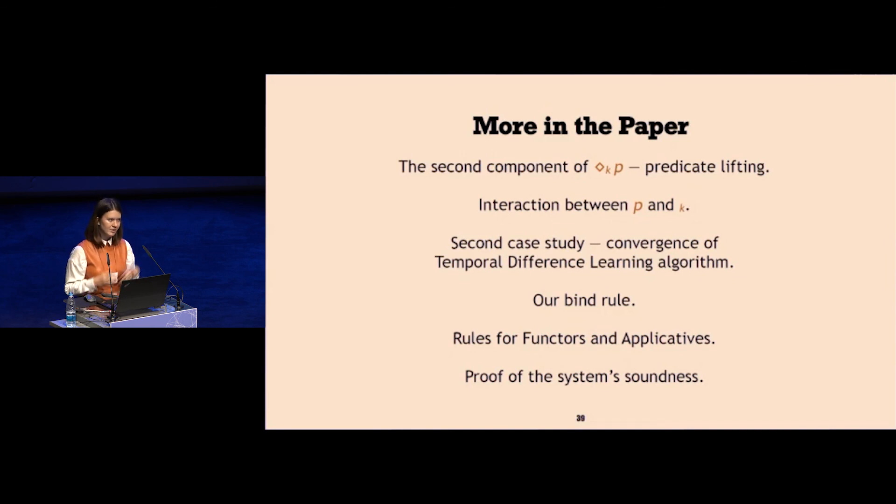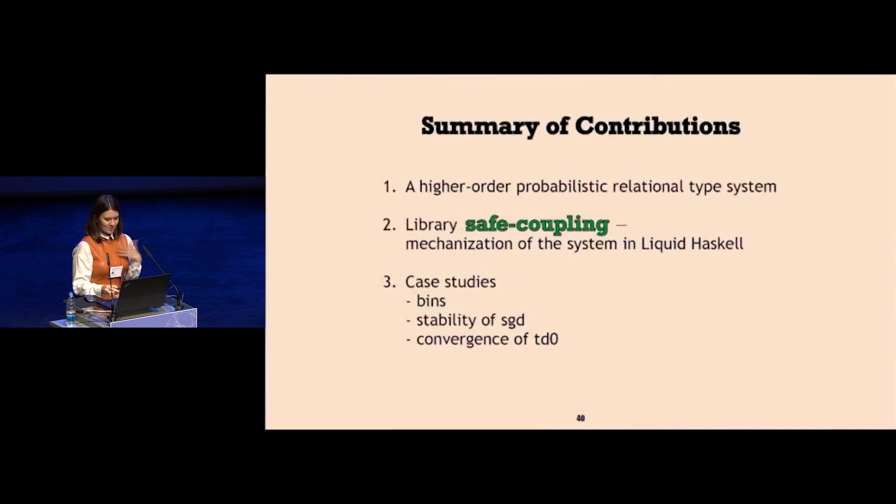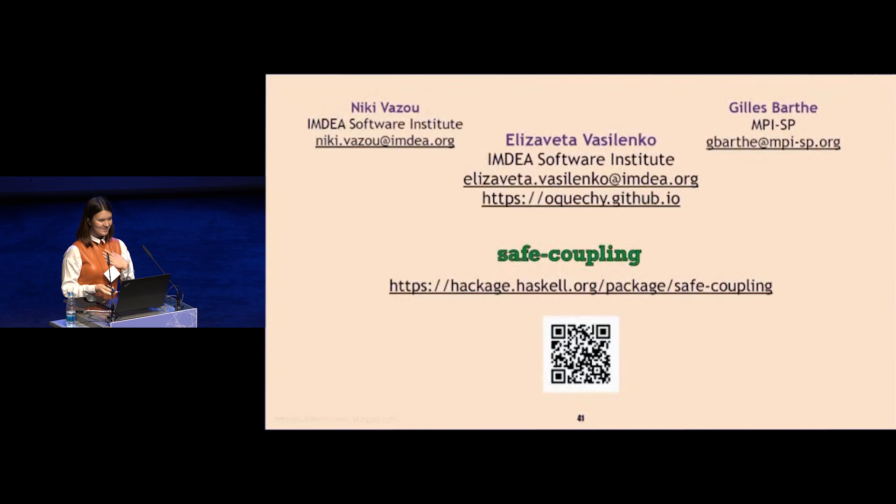Our highlight is the bind rule since we are a higher order system, which allows us to infer rules for functor and applicative interfaces as well. With that, I presented this higher order relational probabilistic type system. I encoded it as assumptions in liquid Haskell, which allowed me both syntax directed and non-syntax directed proofs, and explored the usability of library with several case studies. Thanks. Please feel free to contact us, and for more liquid Haskell visit Haskell symposium.